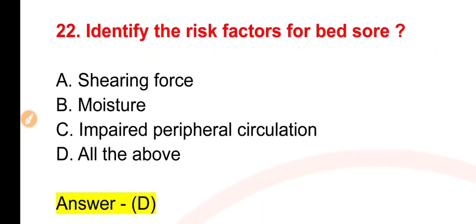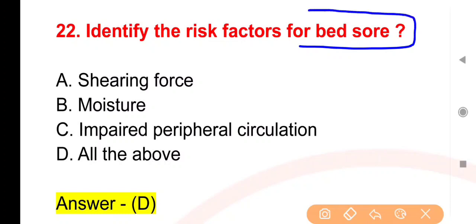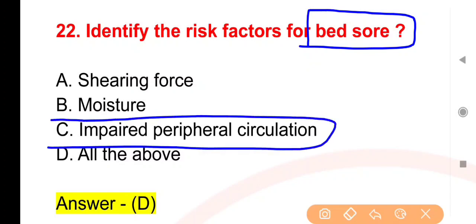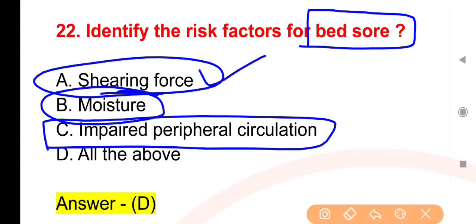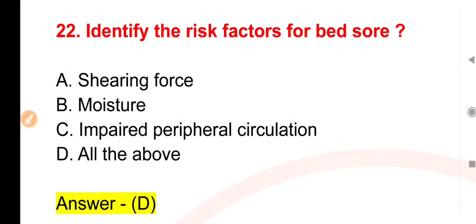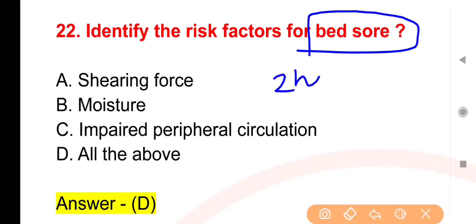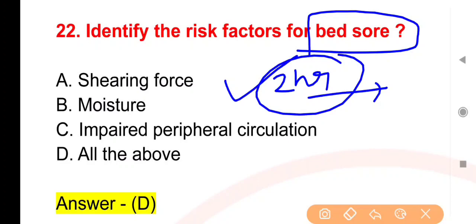Next question: Identify the risk factors for bed sore — options: Shearing force; Moisture; Impaired peripheral circulation; All of the above. The right answer is option D. Jab koi person lagaataar ek hi position par rehta hai toh contact area mein blood circulation kam ho jaata hai; moisture aur shearing force (patient ke bed par shift hote samay friction) bhi bed sore ke risk factors hain. Bed sore rokne ke liye har do ghante baad position change karwana sabse best intervention hai.